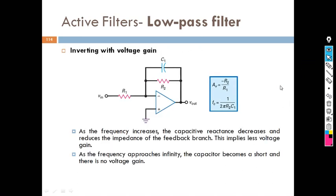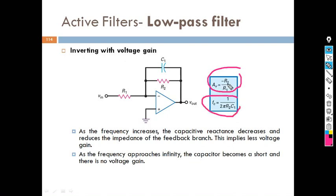Moving on to the next one: inverting with voltage gain. The last one was non-inverting; now this is inverting with voltage gain. This is also a low pass filter. You have to remember here that the gain Av = −R2/R1, and the cutoff frequency is designed similarly as before.